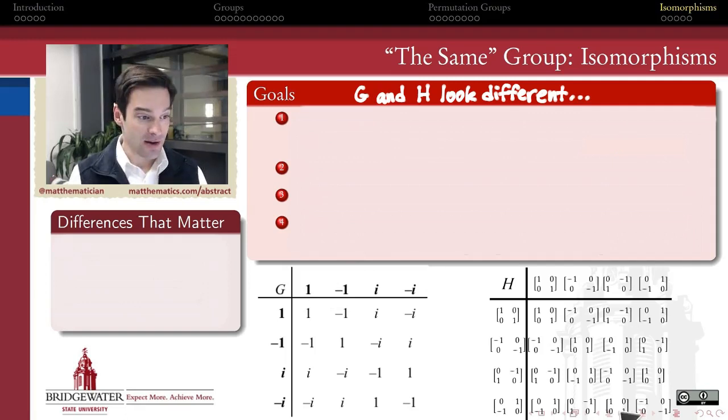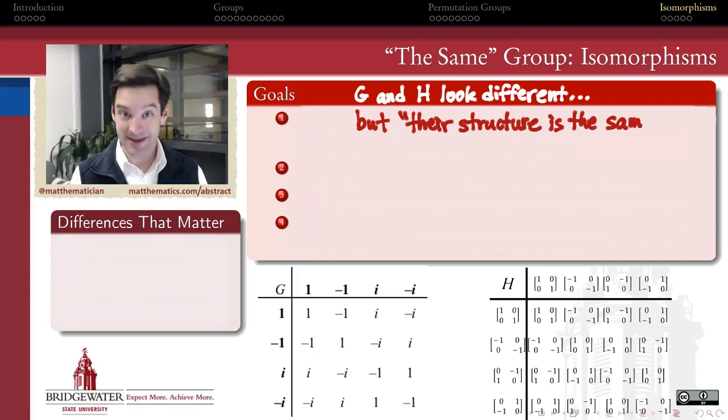On the right here is a different looking group. Its objects are two by two matrices. Its operation is matrix multiplication. For example, this matrix multiplied by itself gives me that matrix. These are two very different looking algebraic structures. The question we want to ask though is: is it possible that those differences are purely cosmetic? If we look past the differences in the nature of the elements and the type of operation, is the underlying structure nevertheless the same?